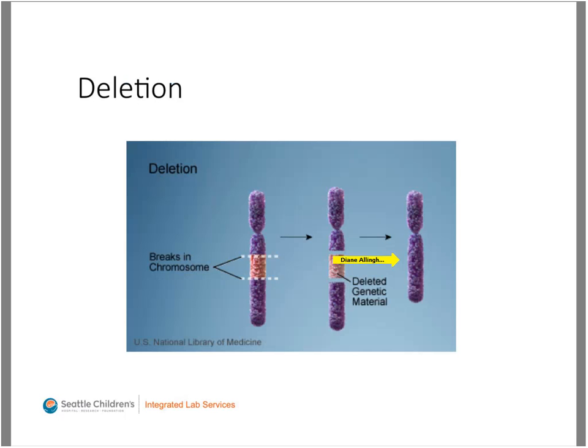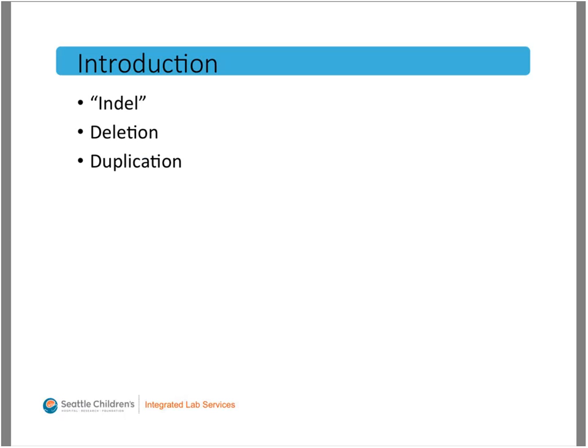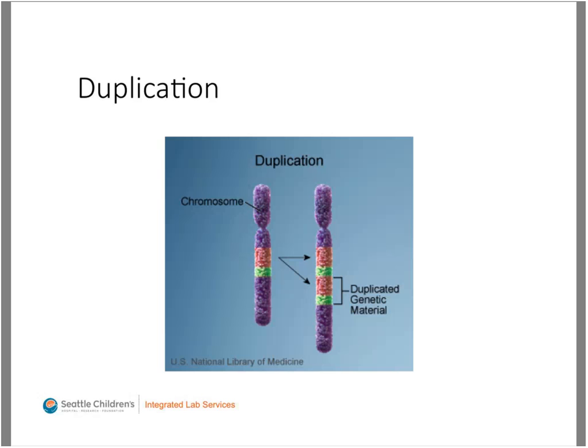A duplication is essentially the reverse of a deletion. Instead of removing a portion of the DNA, a second copy is made. It can also range from a few bases to whole genes or several genes, and again may alter the protein if it occurs within a gene. If the whole gene is duplicated, this can lead to triploinsufficiency — the addition of 50% more of the protein. Whether this causes disease depends on the disorder, how it's inherited, and the types of variants that might cause the disease. Most duplications are below the level of typical cytogenetic analysis, requiring higher resolution to detect them.